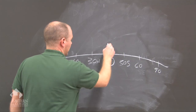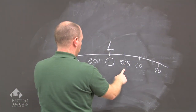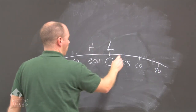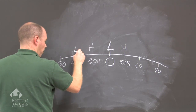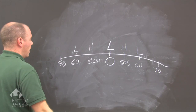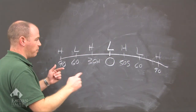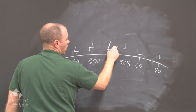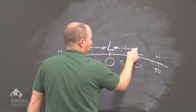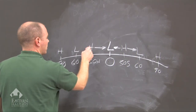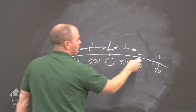At the equator is the ITCZ, which is a low pressure. From the equator to 30 degrees north and 30 degrees south is the subtropical high pressure. At 60 degrees north and 60 degrees south we have the subpolar low pressure, and at 90 degrees the polar high is at the surface. So we have alternating pressures. At the surface, air moves from high to low throughout all these zones.